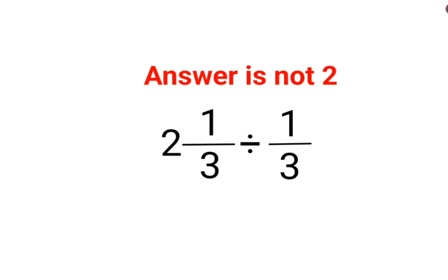...that when you have problems like these, you need to convert this mixed form into an improper fraction. This means multiplying the denominator with the integer part: 2 multiplied by 3, that gets you 6, plus the numerator which is 1.